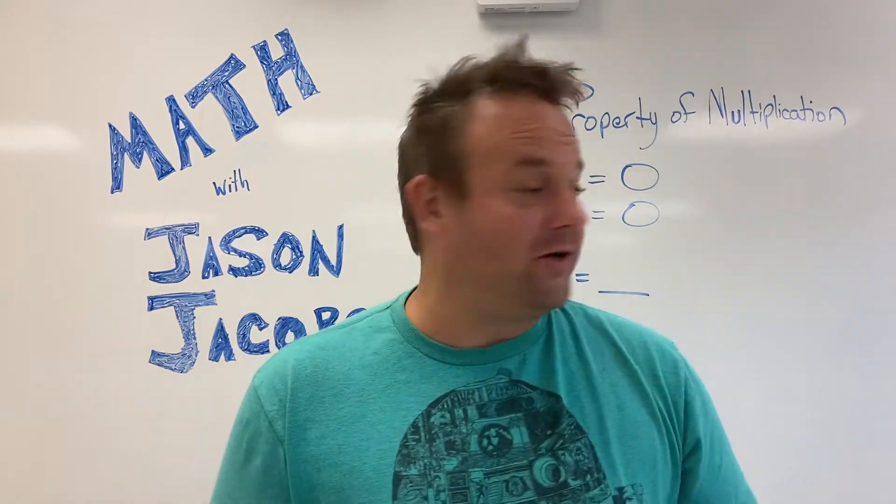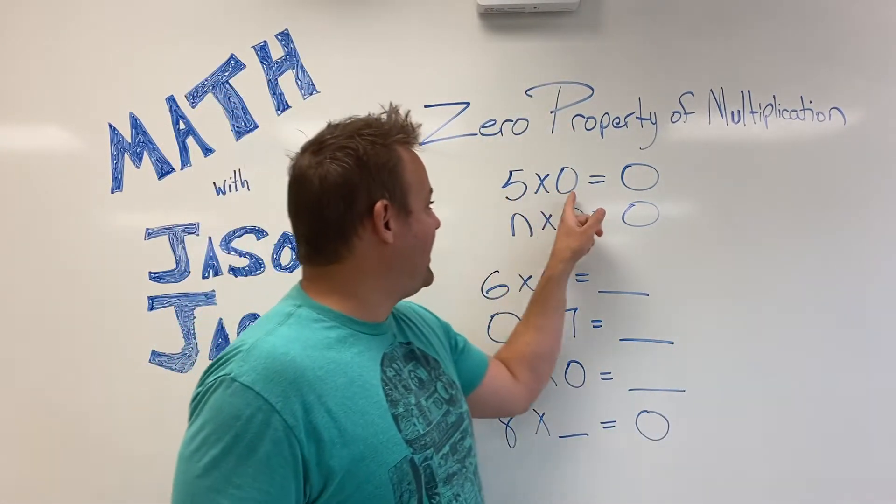Zero property of multiplication. That's what you're going to learn today. Look at this. We have five times zero equals zero.